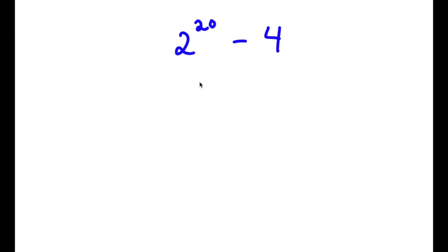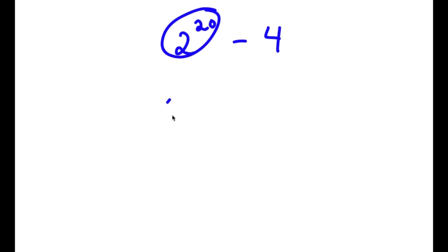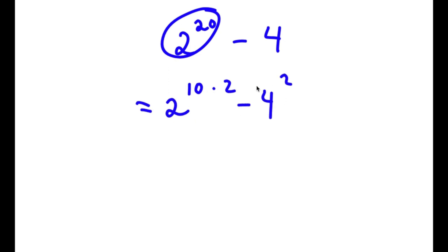In this problem, I have 2 to the power of 20 minus 4. To solve this, I'm going to first rewrite 2 to the power of 20 as 2 to the power of 10 times 2. So this is equal to 2 to the power of 10 times 2, minus 4.